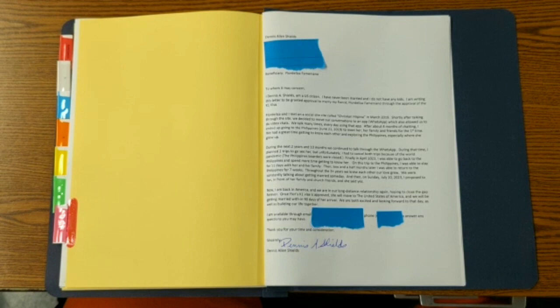During the next two years and ten months, we continued to talk through WhatsApp. During that time, I planned two trips to go see her, but unfortunately, I had to cancel both trips due to the world pandemic. The Philippine borders were actually closed. Finally, in April 2022, I was able to go back to the Philippines and spend more time getting to know her. On that trip, I was able to stay for 11 days with her family and friends. Then, two and a half months later, I was able to return to the Philippines for seven weeks. Throughout the three plus years that we've known each other, our love has grown. We were consistently talking about getting married someday. And then, on Sunday, July 10th, 2023, I proposed to her in front of her family and her church friends, and of course, she said yes.